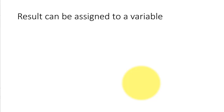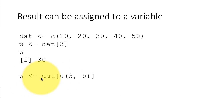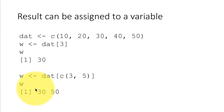Until now we've been subsetting vectors without assigning the result to any variable. We can do that too. For example, w = dat[3] means w will contain the value 30. Or w = dat[c(3, 5)] means w will contain the vector 30, 50. When we do assignment, nothing is displayed on the console — as I've already mentioned, when you assign something to a variable, R remains silent, and the only way to see the result is to type the variable name as a command.